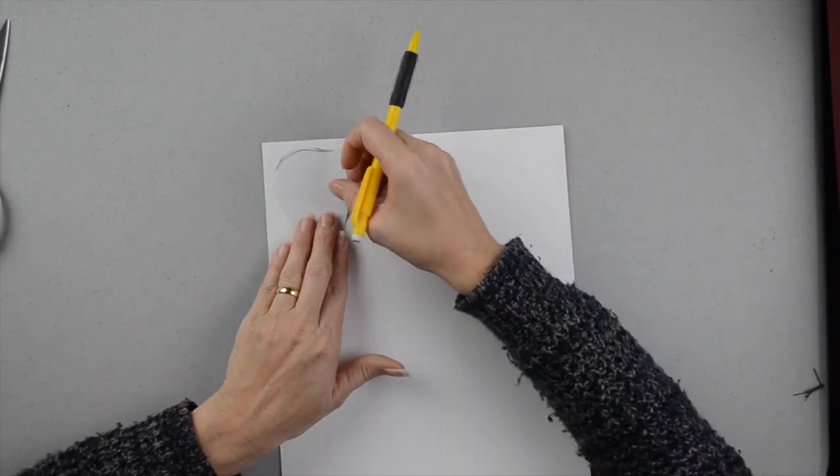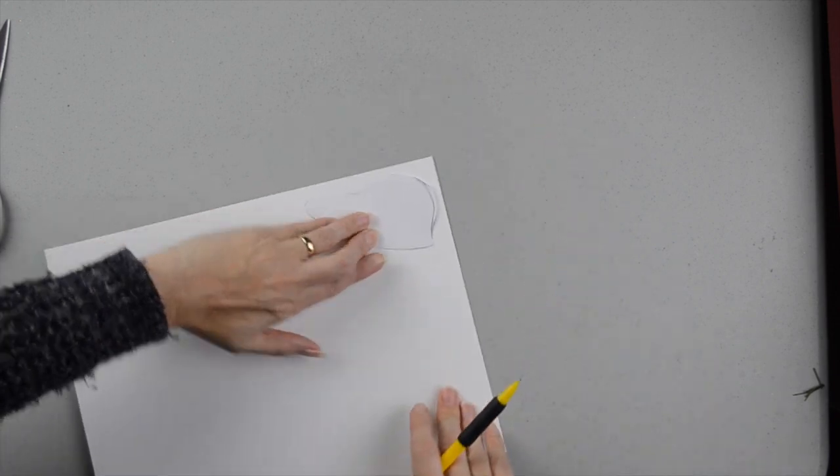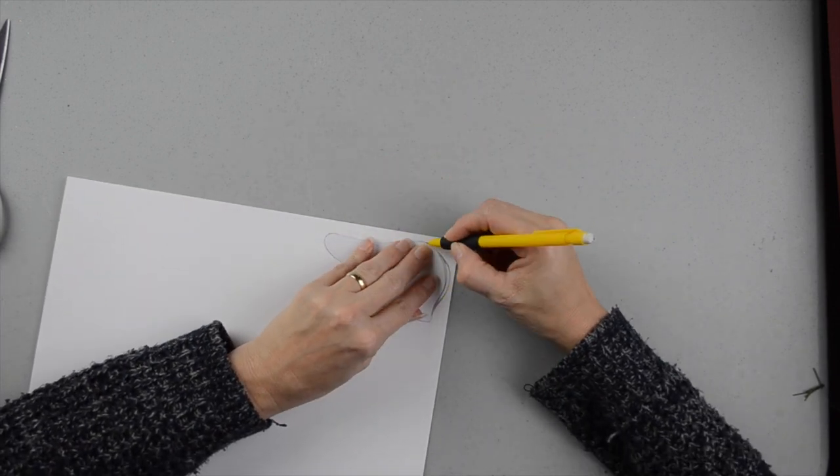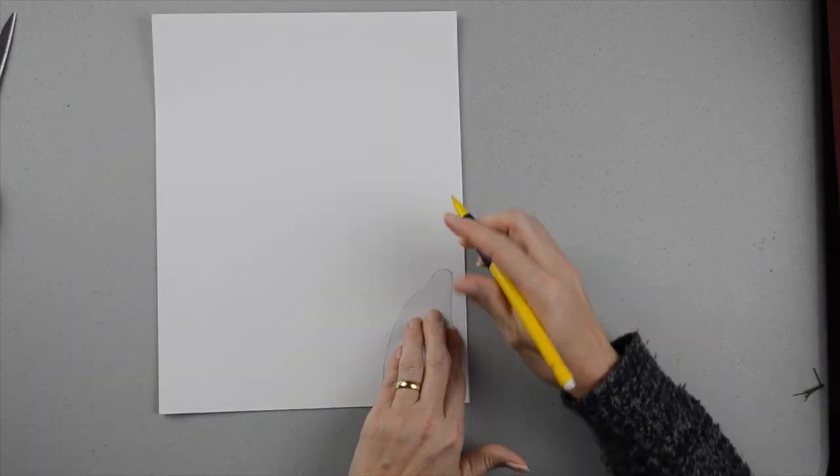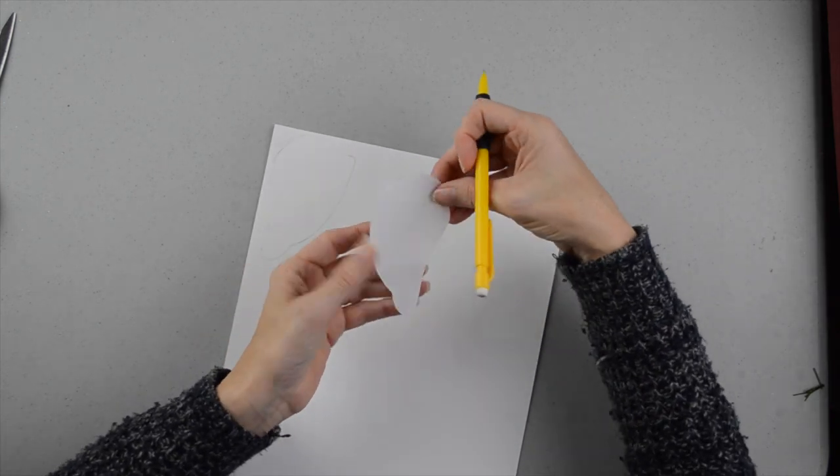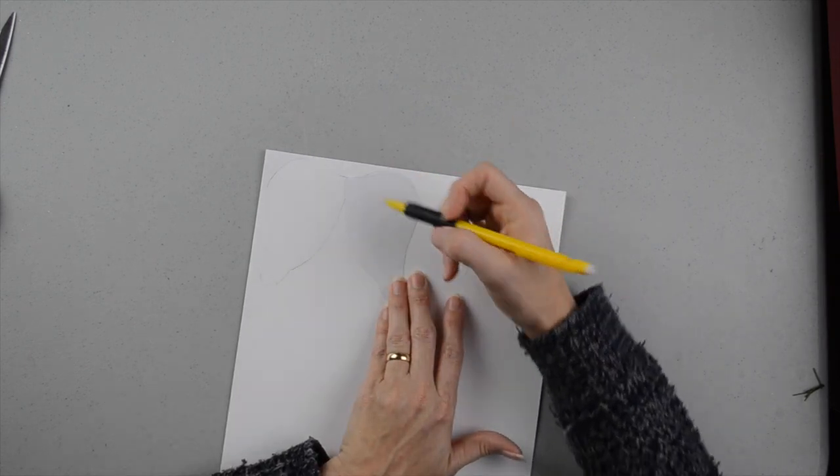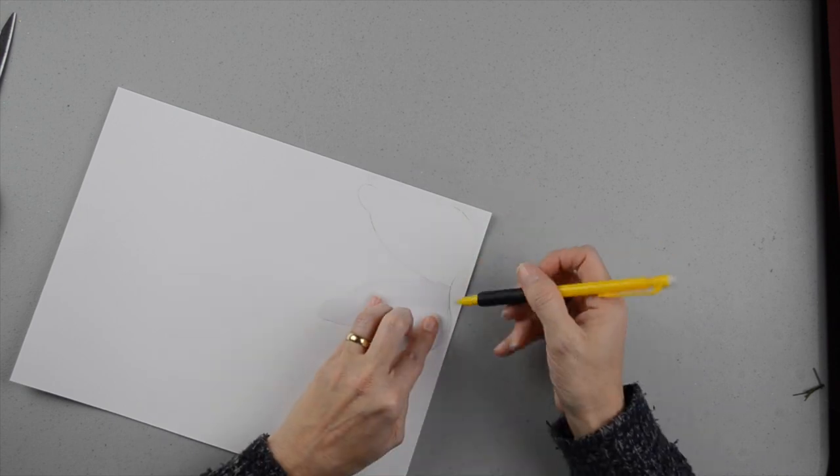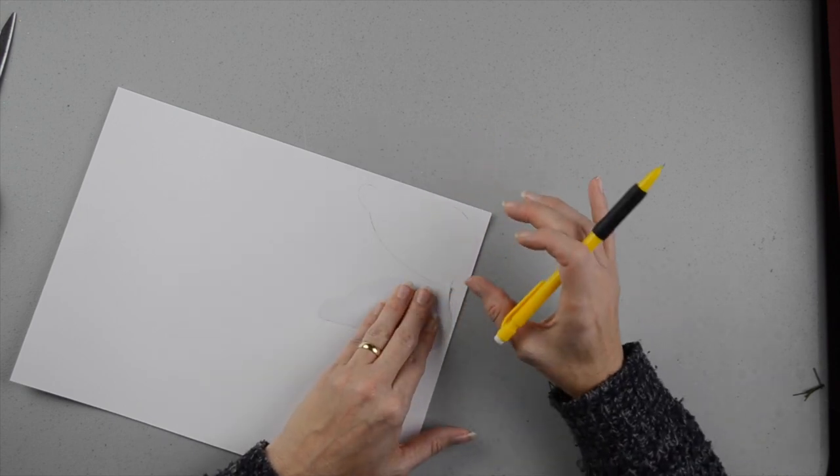So to begin, I'm going to trace my wing template out onto this card stock. Then I'm going to take the wing template and I'm going to turn it the opposite direction, and then I'm going to put it right up beside my other traced out image. Then trace out the other wing. I am overlapping the two wings a bit because I want my wings to be one piece.